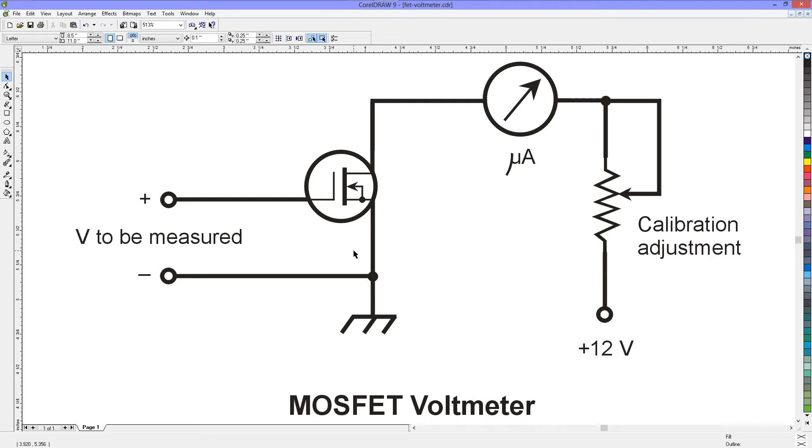You connect it up just like this. Very simple. It's like a DC amplifier, a very simple direct current amplifier. You have a microammeter here, or in some cases, maybe a milliammeter. It kind of depends.